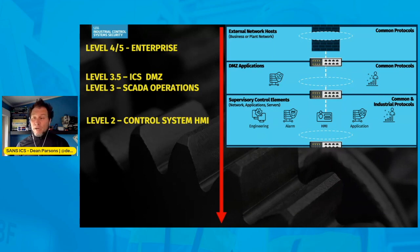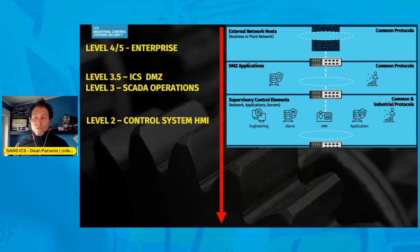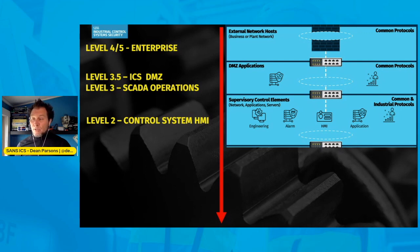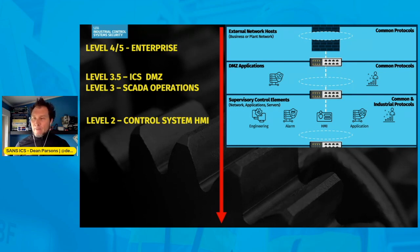A PLC running ladder logic or other code for the control system will sense and understand the physical state of an engineering process, then send signals to engineering field devices at lower levels of the Purdue — such as level zero — to change the state of the physical environment, such as moving an actuator in the real world through an RTU or similar device. A prime example would be an open or close breaker command at an electric substation to energize or de-energize power to a region. As we go lower in the Purdue, more specific engineering and industrial control system protocols are used.